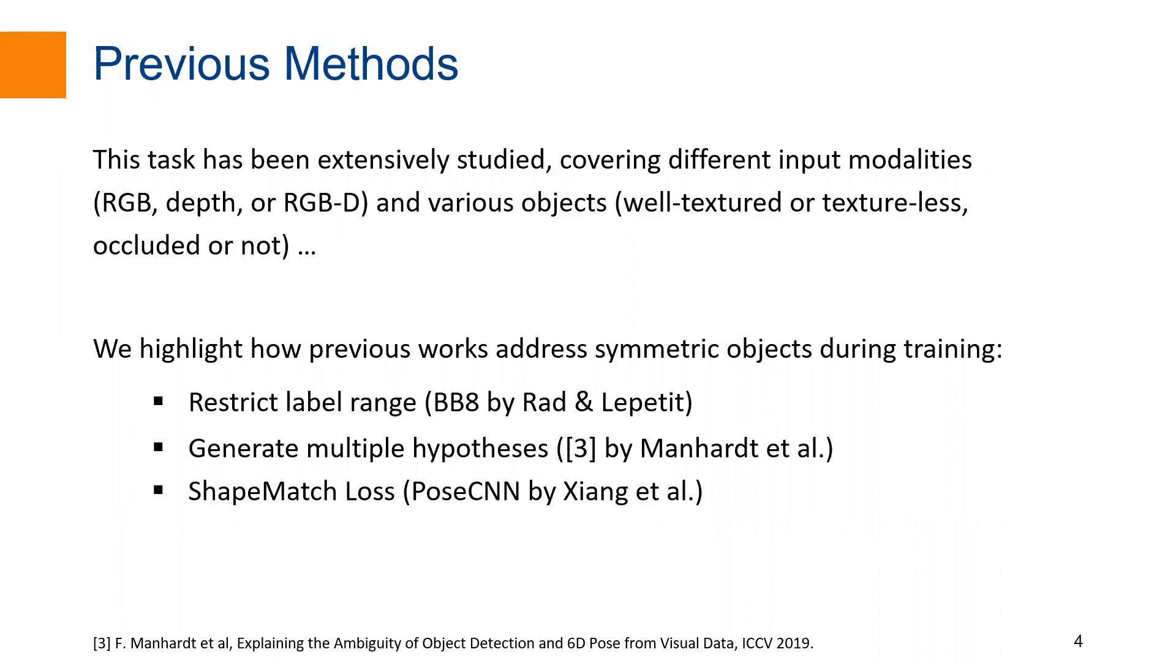Identical images of symmetric objects might have different rotation labels. It could raise problems during training. To solve this problem, BB-8 restricts the label range of symmetric objects to avoid ambiguity. However, it introduces an additional classifier in order to handle the boundary case. Another approach is to generate multiple hypotheses, where post-processing is needed to retrieve the 6D pose during inference.